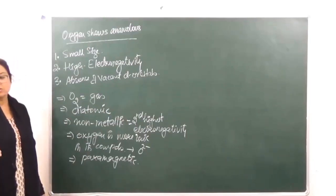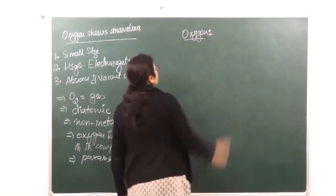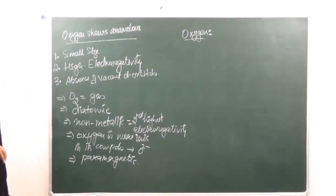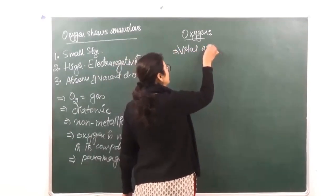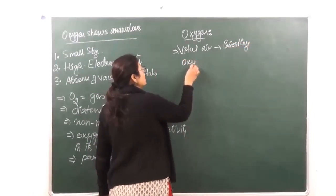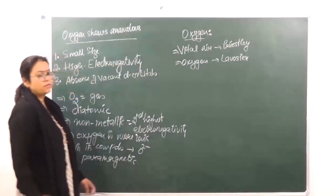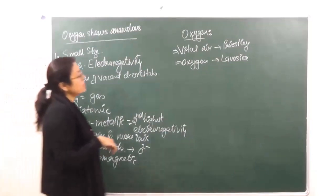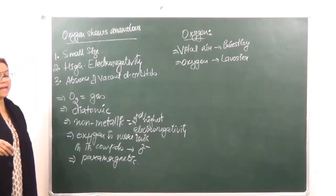These are the points of differences. Now let's go on to the first compound of Group 16 — oxygen. Oxygen was first discovered by Priestley. It was later named 'oxygen' by Lavoisier. The word 'oxygen' means acid maker, because it is present in almost all oxa acids and helps in making acids, which is why Lavoisier called it oxygen.